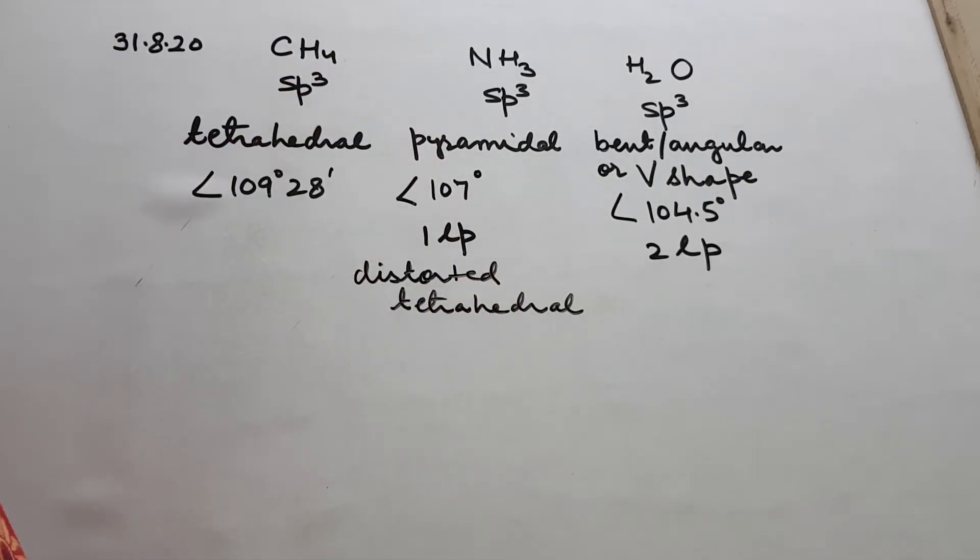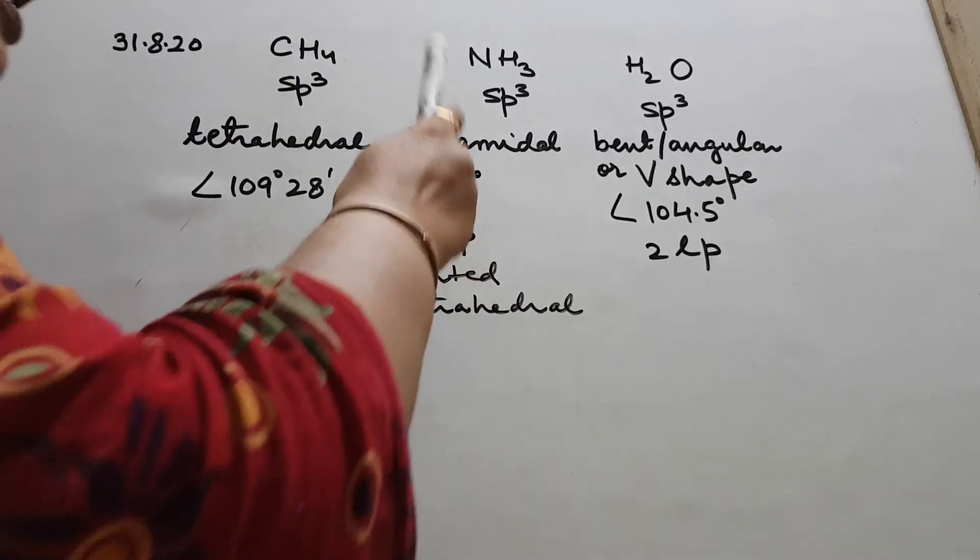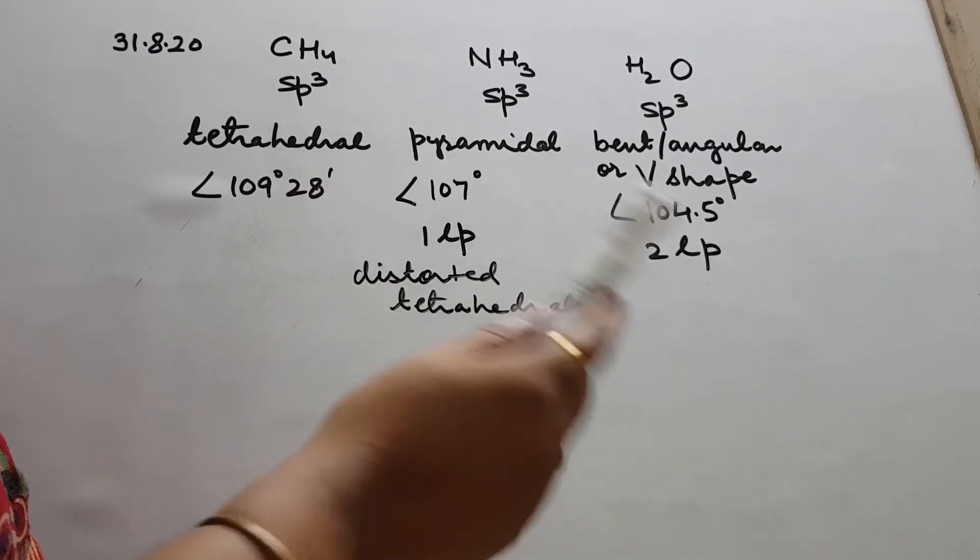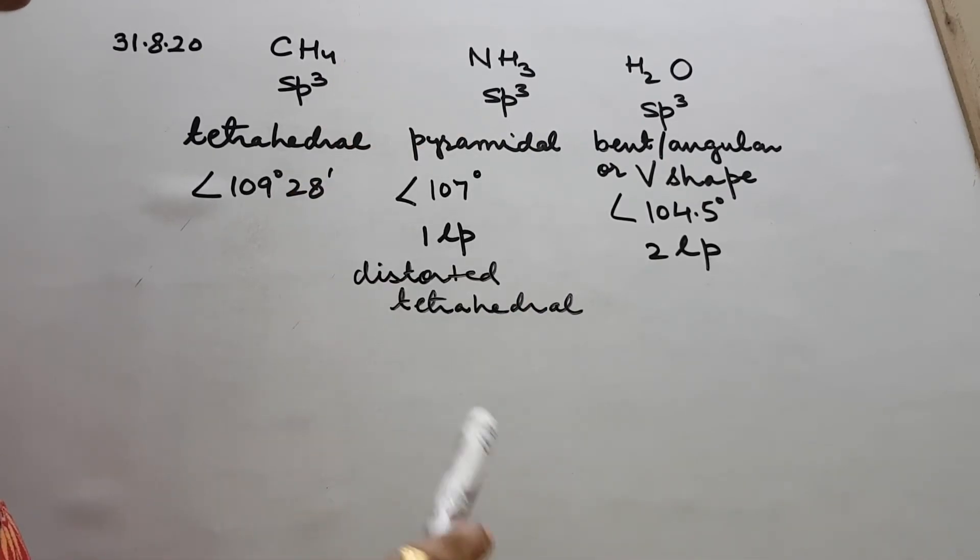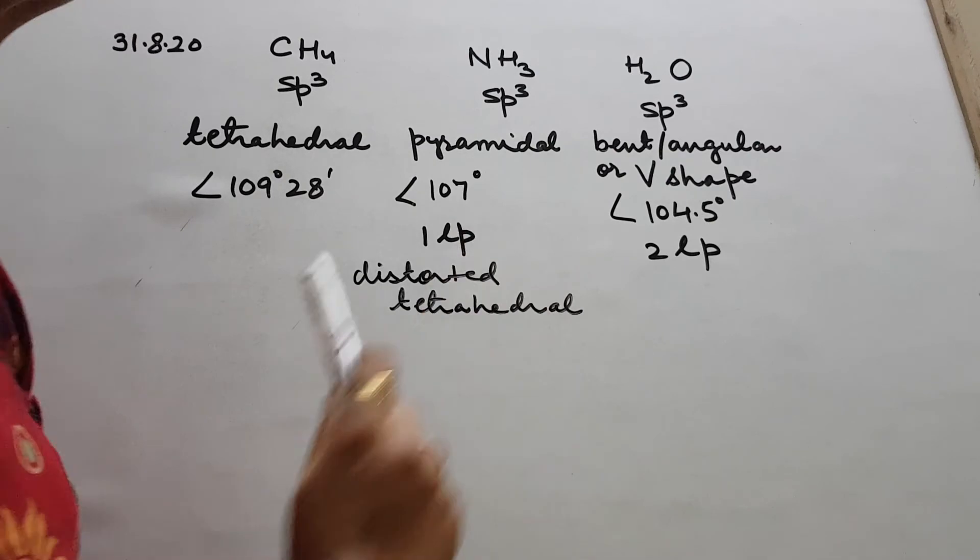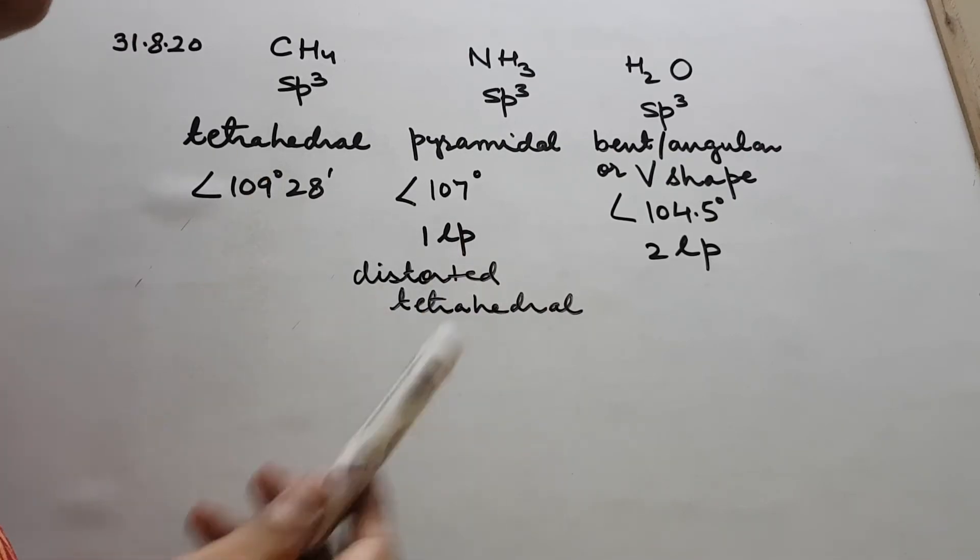With lone pairs you have mainly these two cases. Otherwise, in sp, sp2, or any other type of hybridization, they ask mainly with bond pairs only. This is all for your VSEPR theory and hybridization, covering all important points.